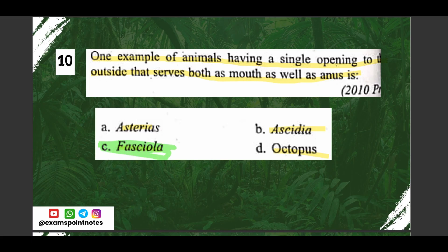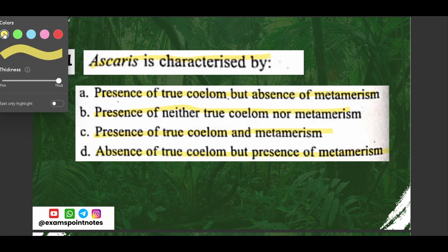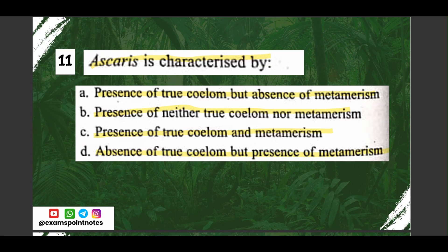Question number eleven: Ascaris is categorized by — A) presence of true coelom but absence of metamerism, B) presence of neither true coelom nor metamerism, C) presence of true coelom and metamerism, D) absence of true coelom but presence of metamerism. The correct option is option B, presence of neither true coelom nor metamerism.